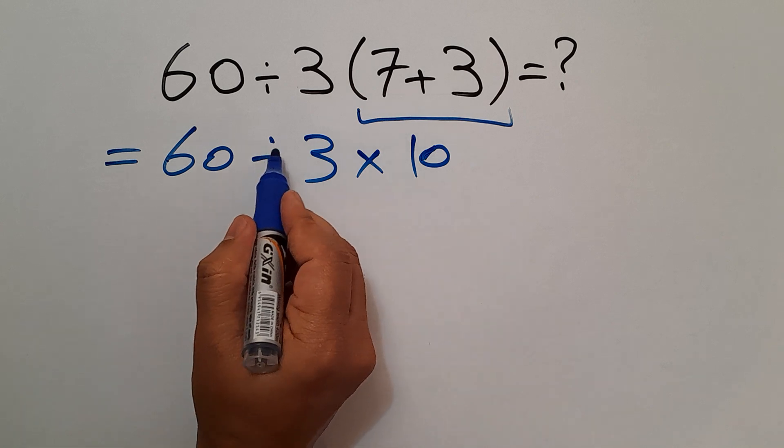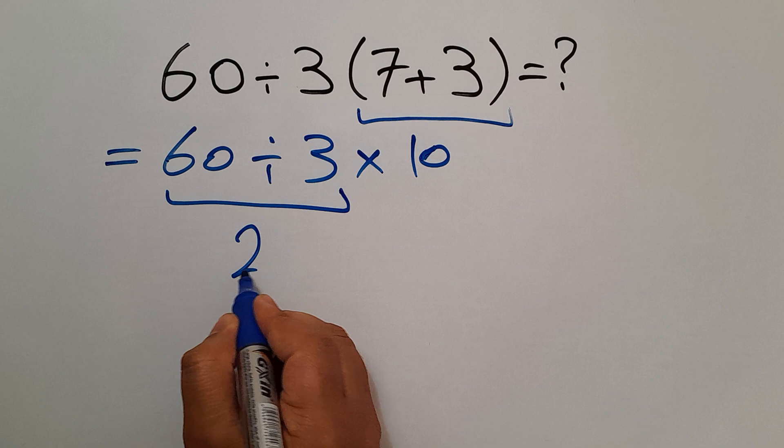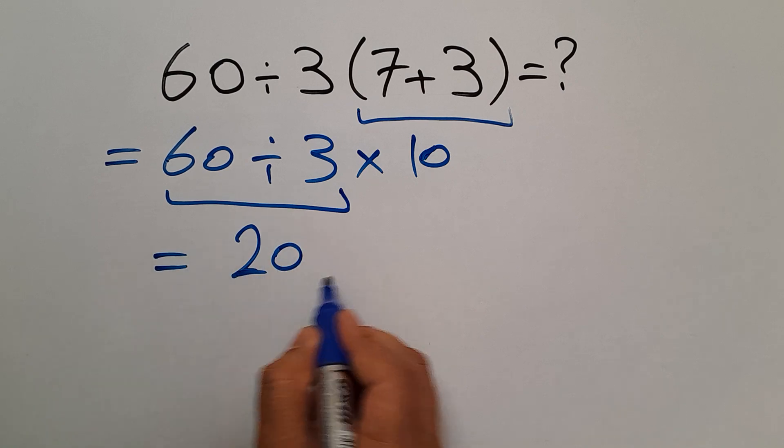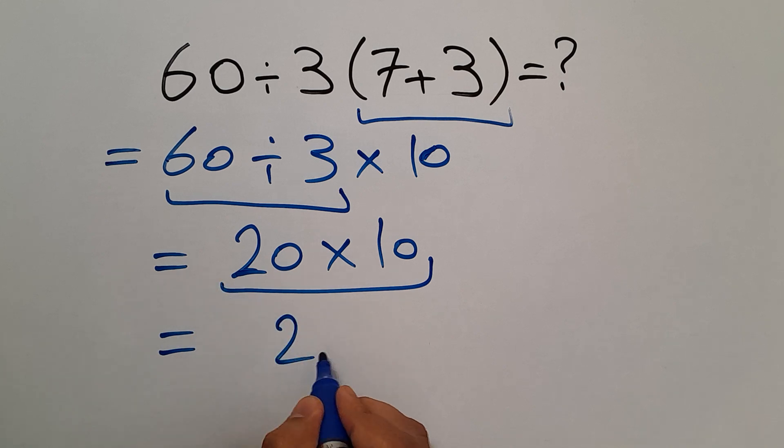And now we have to handle this division. 60 divided by 3 gives us 20. Okay, so 20 times 10. And 20 times 10 equals 200.